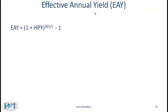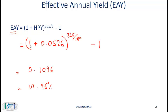Finally, the most precise measure is the effective annual yield, where we take 1 plus the holding period yield raised to the power of 365 over 180, minus 1. Notice that we are compounding — using an exponent — and using a 365-day year. Since we have the holding period yield, the return is based on the initial investment and not the face value. So the effective annual yield does not have any of the issues, and this number is also higher compared to both the bank discount yield and the money market yield.